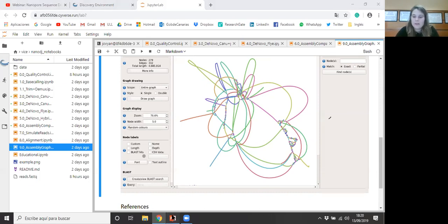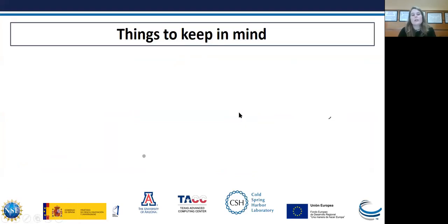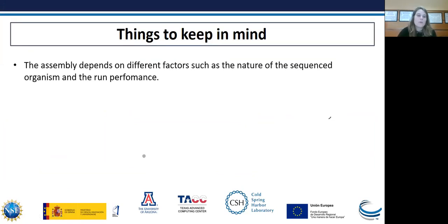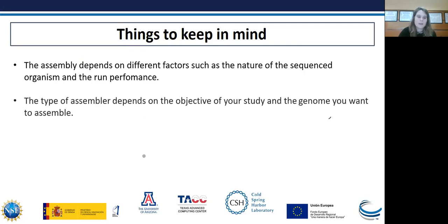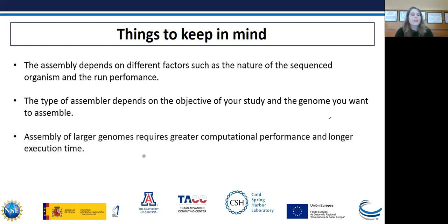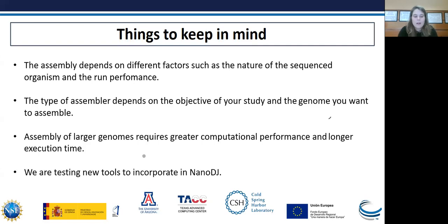To finish this webinar, you have to keep some things in mind. First, the assembly depends on different factors such as the nature of the sequenced organism and the run performance. The assemblers mentioned in this webinar can be applied to other types of genomes such as the human one, but you have to keep in mind that the choice of the best assembler depends on the objective of your study and the genome you want to assemble. The assembly of large genomes requires greater computational performance and longer execution time. Finally, we are testing new tools to incorporate into NanoDJ, so keep an eye on the NanoDJ GitHub page because we are updating it — Hector will explain more details about this in his webinar.